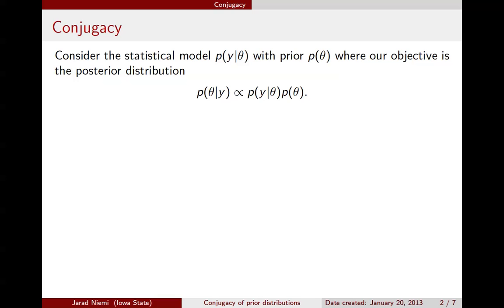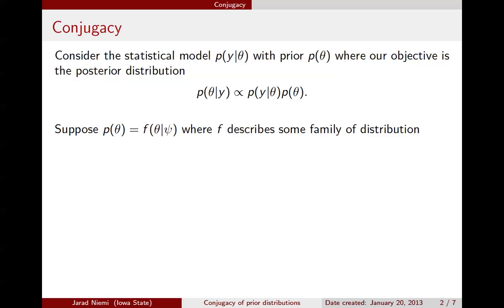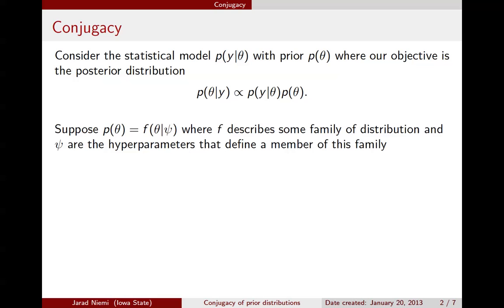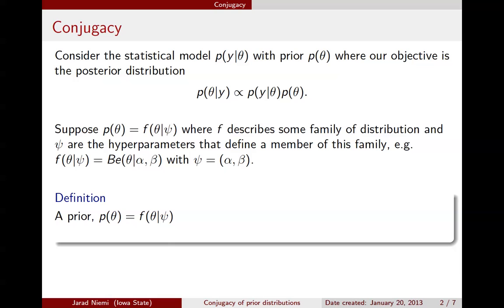Suppose that we have a particular form of the prior distribution, where f describes some family of distributions and psi are the hyperparameters that define a particular member of this family. For example, we've been using the beta distribution, where psi will be the alpha and beta parameters. The definition of conjugacy is that if the prior has a particular family, then the prior is conjugate for the statistical model if the posterior has the same family, typically with the hyperparameters being updated.